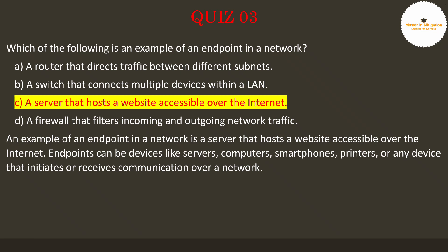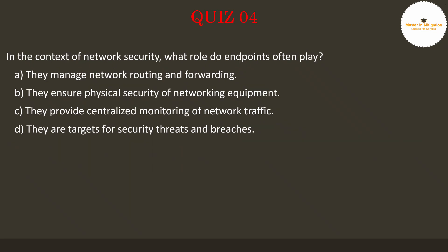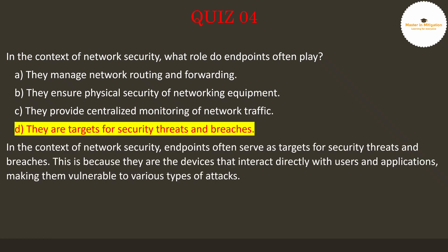Let's go to question 4. In the context of network security, what role do endpoints often play? Pause the video now to select the best answer. The answer is D — they are targets for security threats and breaches. In the context of network security, endpoints often serve as targets for security threats and breaches, because they interact directly with users and applications, making them vulnerable to various types of attacks.